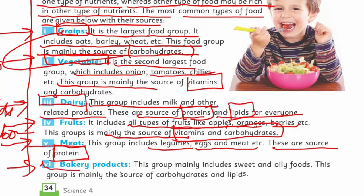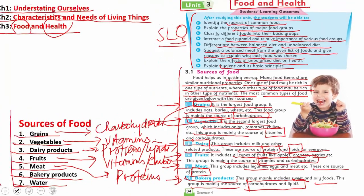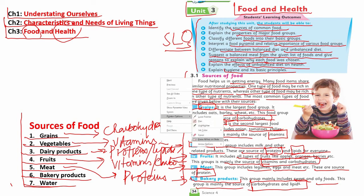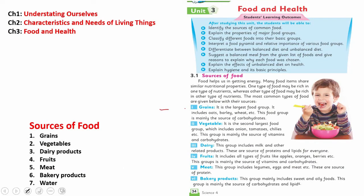Number six is bakery products — all those products we purchase from a bakery. This group mainly includes sweets and oily foods, and they are sources of carbohydrates and lipids. Now, let me do a quick recap. Grains: carbohydrates. Vegetables: vitamins. Dairy products: proteins and lipids. Fruits: vitamins and carbohydrates. Meat: protein. Bakery products: carbohydrates and lipids.